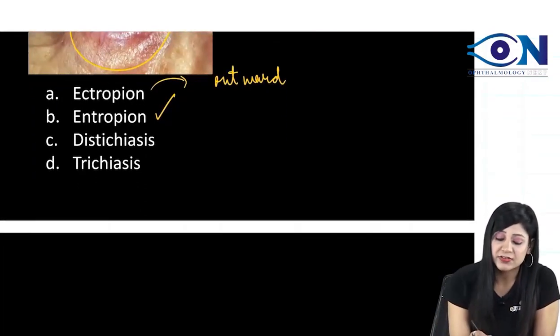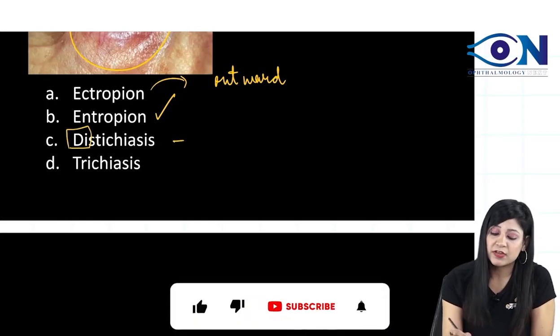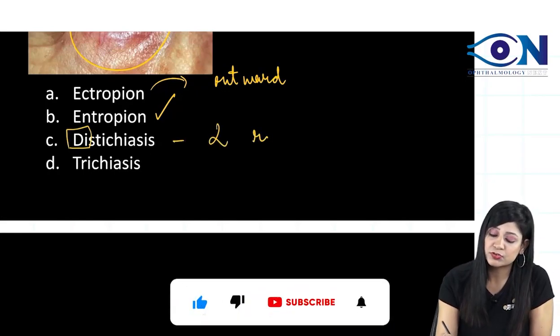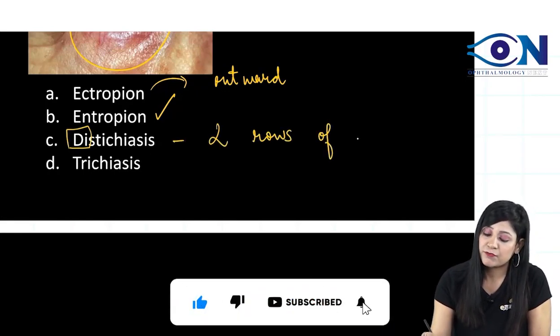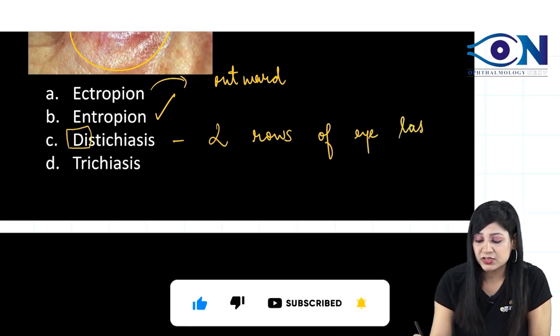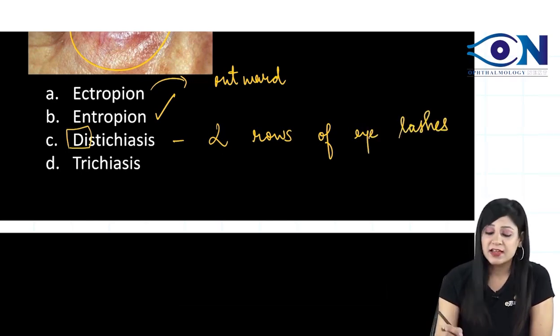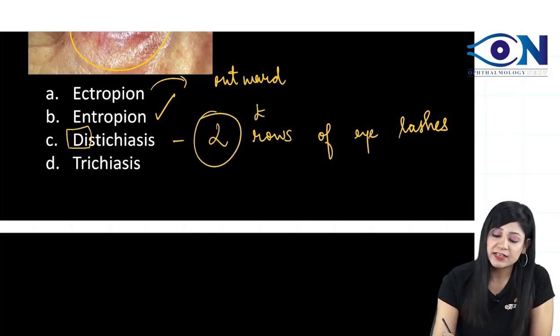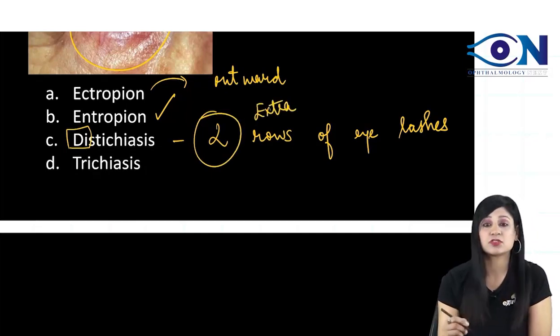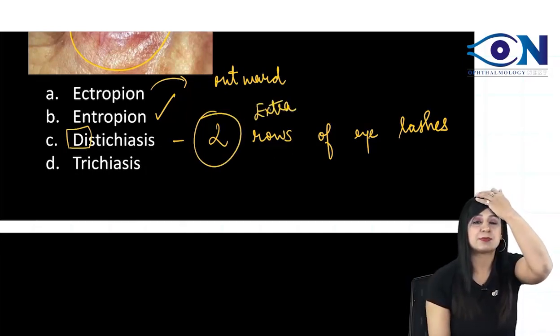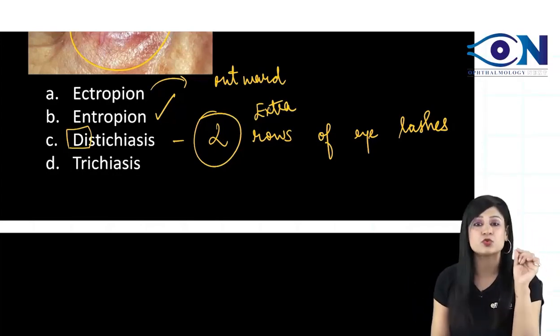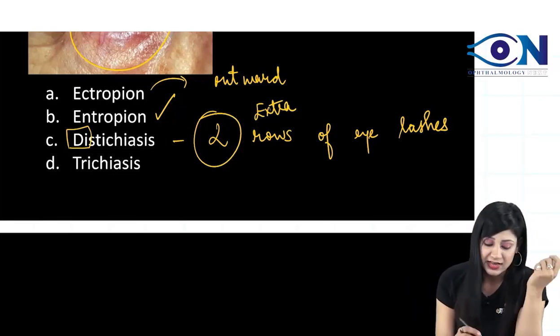What is distichiasis? Now always remember dye means two. So we have two rows of eyelashes. If we have two rows of eyelashes, it is called as the distichiasis. Or you can say instead of two, we can also say that there is an extra row of eyelashes. One everybody is having and instead of one, if I am having two rows, then it is called as distichiasis.